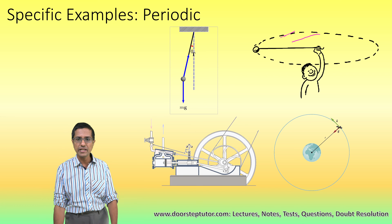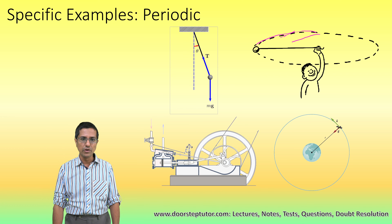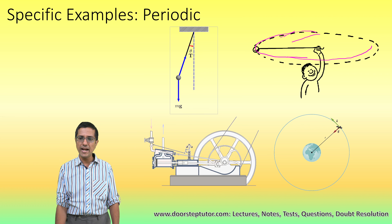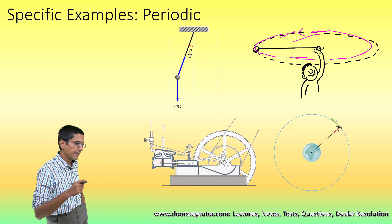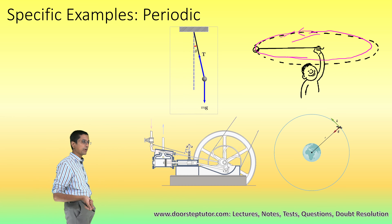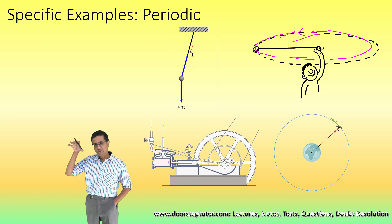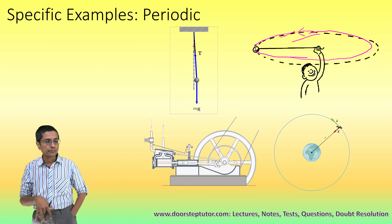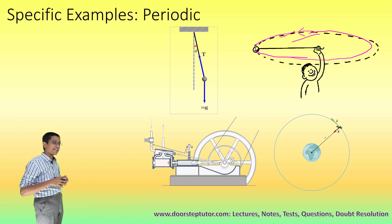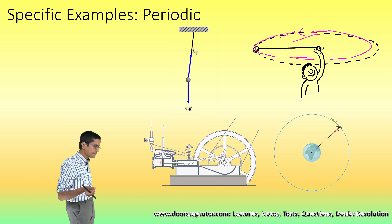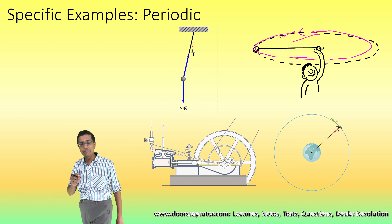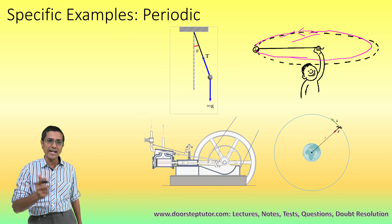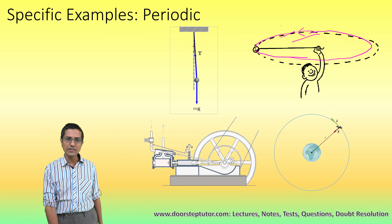When you are rotating a stone tied with a thread, swinging it around with your hand, this becomes a periodic motion. However, in the beginning and at the end it is not periodic, because when it's gaining speed or when you are slowing it down to bring the stone down, the motion is not repeating after a fixed interval of time — so then it becomes aperiodic.